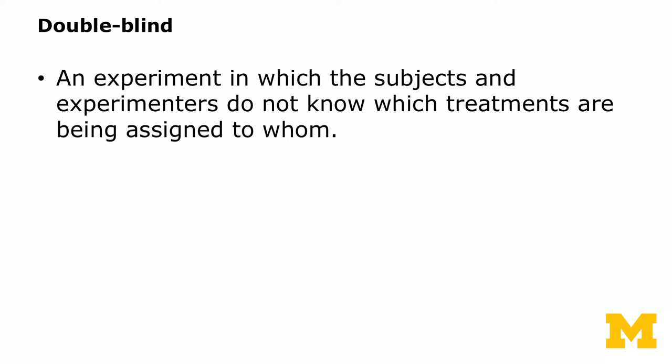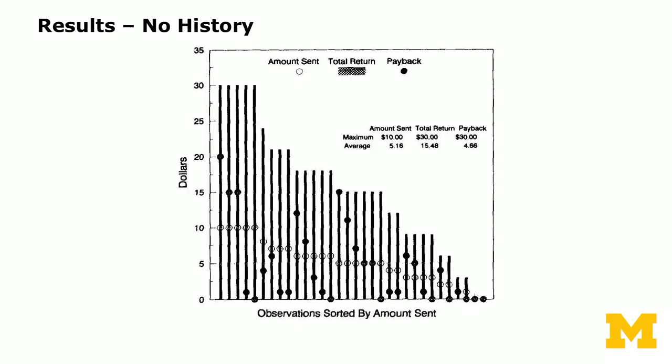A double-blind experiment is one in which the subjects and experimenters do not know which treatments are being assigned to whom, and do not know the decisions either. Eventually, at the end of the experiment, after all decisions are anonymized, the experimenter receives the data.